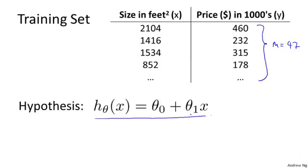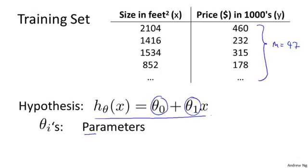To introduce a little bit more terminology, these Theta 0 and Theta 1, these Theta i's are what I call the parameters of the model. And what we're going to do in this video is talk about how to go about choosing these two parameter values, Theta 0 and Theta 1.